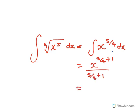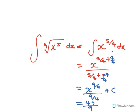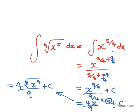5 over 4 plus 1 - make that a common denominator of 4, so 1 times 4 over 4. You get x to the 9 over 4, and on the bottom you get 9 over 4, plus c. The 9 over 4 flips to 4 over 9, so it's 4 over 9 times x to the 9 over 4 plus c. Writing that as a root: 4 over 9 times the 4th root of x to the 9, plus c.